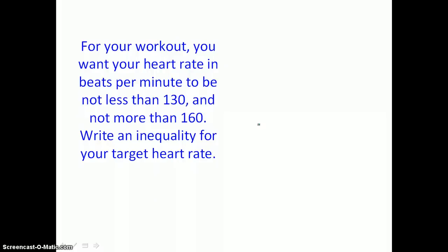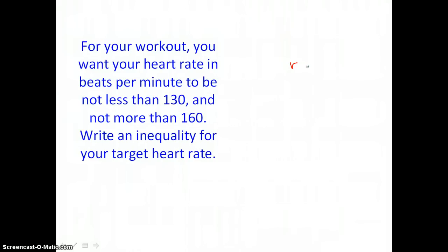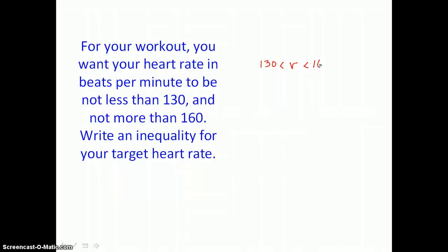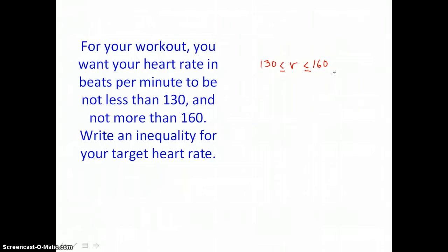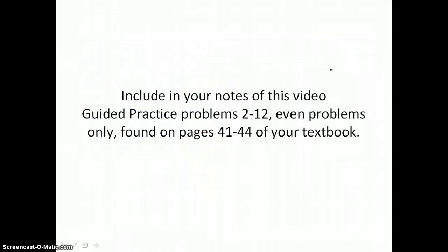For your workout, you want your heart rate in beats per minute to be not less than 130 and not more than 160. Write an inequality for your target heart rate. Letting R be the target heart rate, it can equal 130 because it's not less than 130, and it can equal 160 because it's not more than 160. The inequality that describes the target heart rate is: R is greater than or equal to 130 and less than or equal to 160. Include in your notes guided practice problems 2 through 12, even problems only, found on pages 41 to 44 of your textbook.